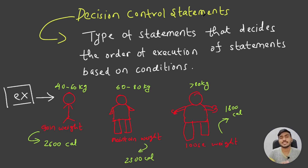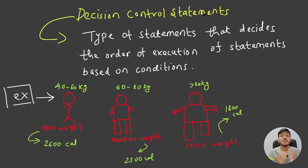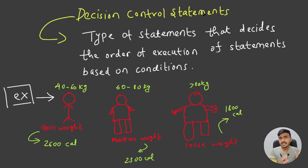Let's understand decision control statements in C++. A decision control statement is a statement which decides the flow of execution, or order of execution, based on a condition. These are the statements which are going to decide the order of execution based on some condition.